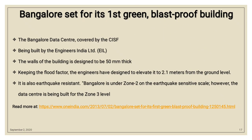As an example, Bangalore has a building which is blast-proof. This is the Bangalore data center, covered by the CISF and built by Engineering India Limited (EIL). The walls of this building are designed to be 50 mm thick. As there are also chances of floods, engineers have designed it to be elevated approximately 2.1 meters from the ground level. It is also earthquake resistant, and although Bangalore is under zone 2 on the earthquake sensitivity scale, the data center is being built to zone 3 level.